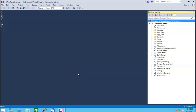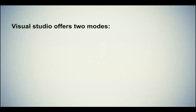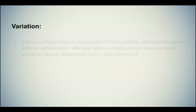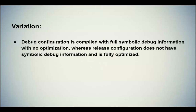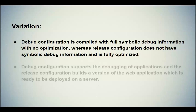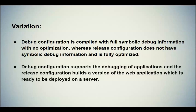Now we will change the configuration settings of the web application to release mode. Before that, let's see the two modes offered by Visual Studio. The first is debug mode and the second is release mode. Debug configuration is compiled with full symbolic debug information and no optimization, whereas release configuration does not have symbolic debug information and is fully optimized. Debug configuration supports the debugging of applications, while release configuration builds a version of the web application that is ready to be deployed on a server.